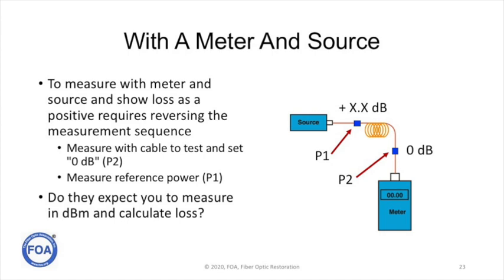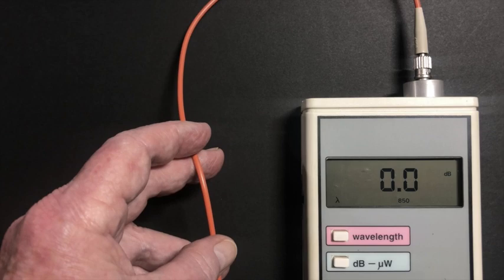If you want to measure with a meter and source and show loss as a positive reading, you have to reverse your measurement sequence. You have to start by making the complete system, launch cable, cable to test and receive cable, and measuring that and setting 0 dB, then going back and measuring the output of the launch cable. That way your output of the launch cable is a bigger number and you get a plus reading. But how many people measure that way? The typical way to measure is you set the output of the launch cable and you go test cables and you can keep testing cable after cable, fiber after fiber, and making loss measurements to that reference. Theoretically, if you did it this way, you would have to make a reference measurement after every test.